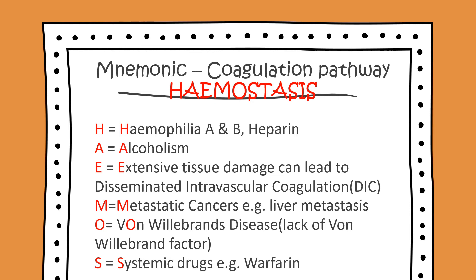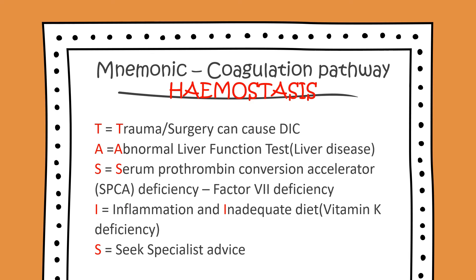In the HEMOSTASIS mnemonic: H equals haemophilia A and B; H equals heparin — these can all cause issues with the coagulation pathway; A equals alcoholism; E equals extensive tissue damage, which can lead to DIC (disseminated intravascular coagulation); M equals metastatic cancers, for example liver metastases; O equals von Willebrand's disease (O is the second letter in von); S equals systemic drugs, for example warfarin; T equals trauma, for example surgery, which can cause DIC.